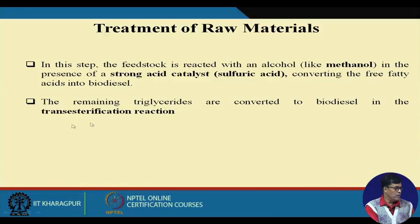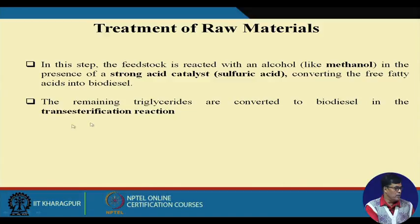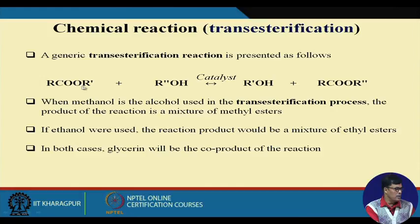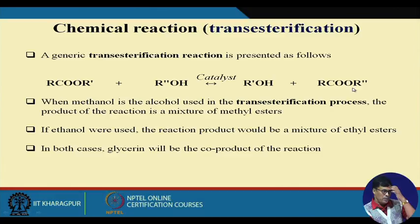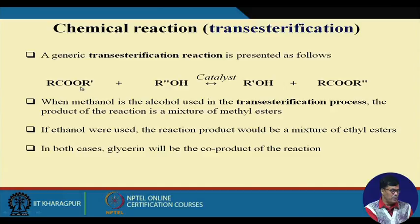The reaction looks like this: the ester present in the oil, in the presence of methanol (CH3OH) and acid catalyst, produces a monoglyceride, some alcohol, and methyl ester — this is called biodiesel. This is the transesterification process. Here we have one form of ester changing to another form of ester, so we call it transesterification.